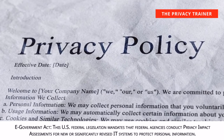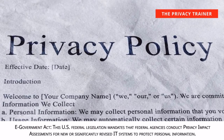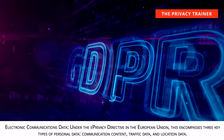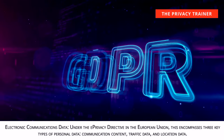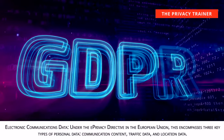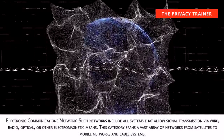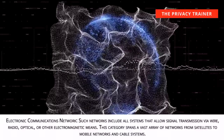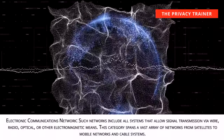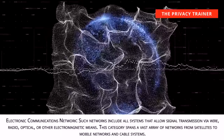E-Government Act. This U.S. federal legislation mandates that federal agencies conduct privacy impact assessments for new or significantly revised IT systems to protect personal information. Electronic communications data. Under the E-Privacy Directive in the European Union, this encompasses three key types of personal data: communication content, traffic data, and location data. Electronic communications network. Such networks include all systems that allow signal transmission via wire, radio, optical, or other electromagnetic means, spanning from satellites to mobile networks and cable systems.